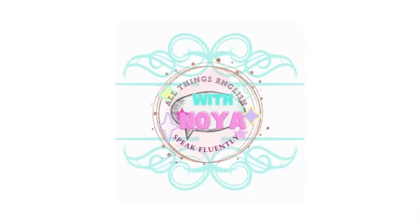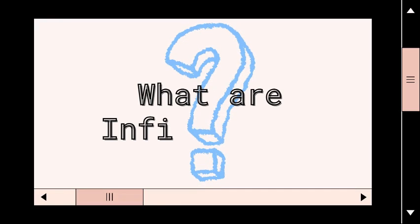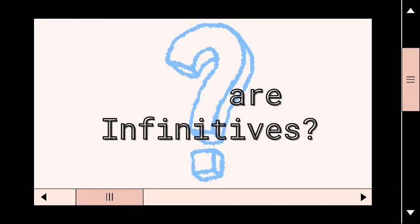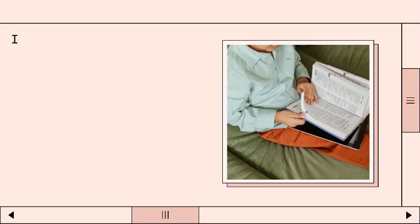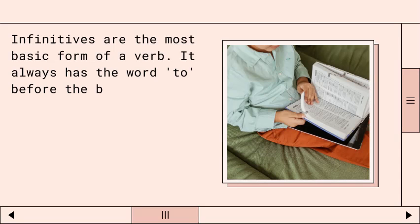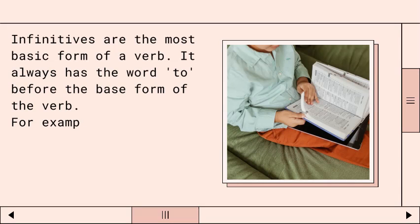So of course, before we start anything, we have to define what infinitives are. Infinitives are the most basic form of a verb. They always have the word 'to' before the base form of the verb. For example: to walk, to run, to see, to do, to have.